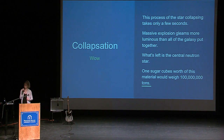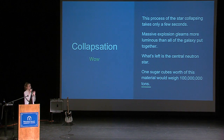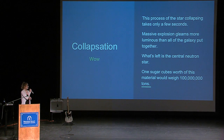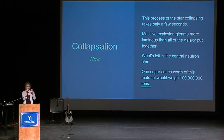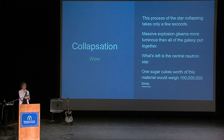The process of the star collapsing takes just a few seconds. This massive explosion gleams more luminous than all of the galaxy combined during this time. What's left is the central neutron star, and just one sugar cube's worth of the material in this neutron star would weigh about a hundred million tons.